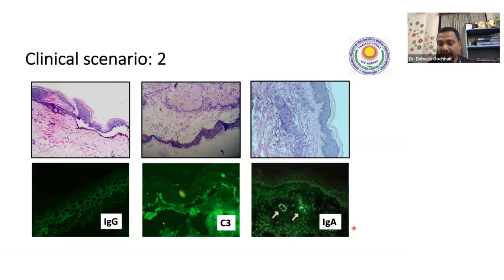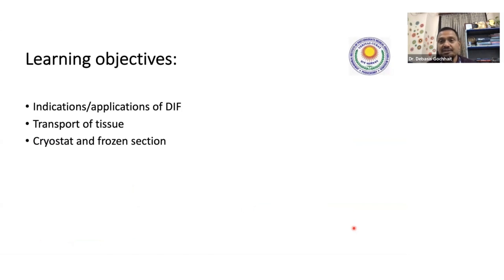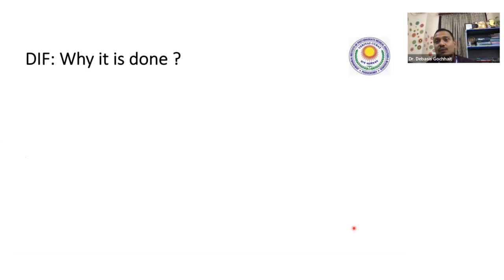Now I will go through the session content. First we will see the indications and applications of immunofluorescence. Then we will know how to transport the tissue — that is very important pre-analytical knowledge for interns and PGs. Then we will see a little bit about the cryostat and cryoprocessing, then sample preparation, then the immunofluorescence microscope, and finally interpretation of the stain. I will keep them very simple and brief.